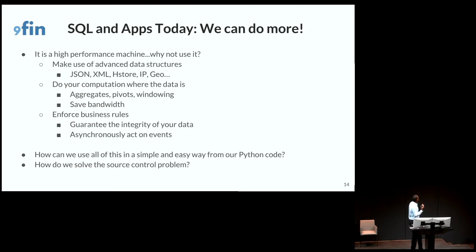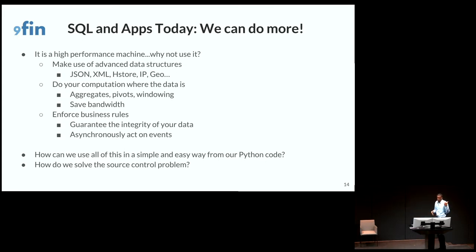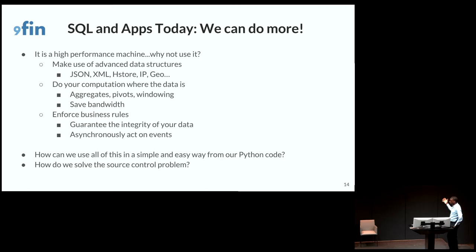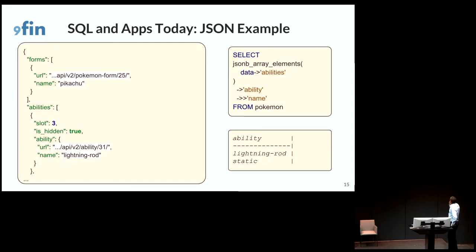But SQL and applications today — can we do more? These are very high-performance machines, especially now, normally written in low-level programming languages like C or C++. We can work with JSON types, we can work with XML. If you can do more stuff in the database, you can do your computation where the data actually resides — that saves you network traffic. And the killer feature of relational databases is that you can guarantee and enforce the constraints of your business logic in that database and it can never go wrong. So how can we use all of this in a simple and easy way from our Python code, and how do we solve the source control problem at the same time?